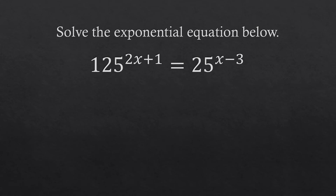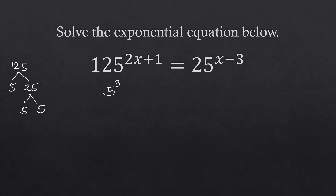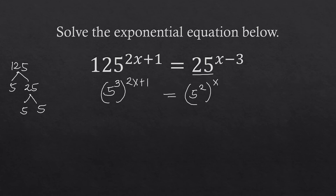Last problem: 125 to the power of (2x + 1) equals 25 to the power of (x − 3). Both numbers can be expressed in terms of base 5. Factoring 125: 5 times 25, then 25 gives 5 times 5 — three 5s total — so 125 equals 5 to the power of 3, raised to (2x + 1). For 25, that is 5 times 5, so 25 equals 5 to the power of 2, raised to (x − 3).